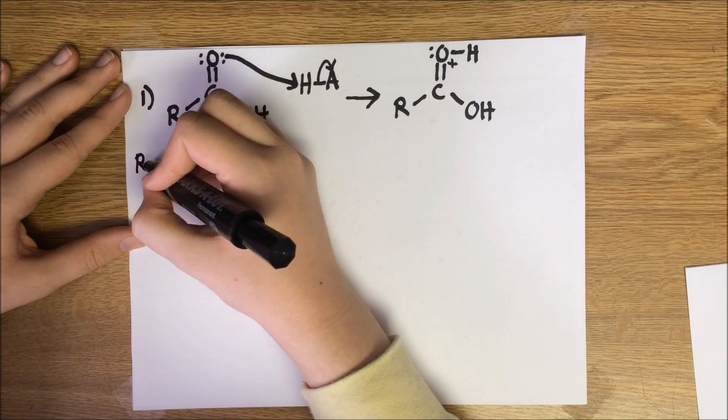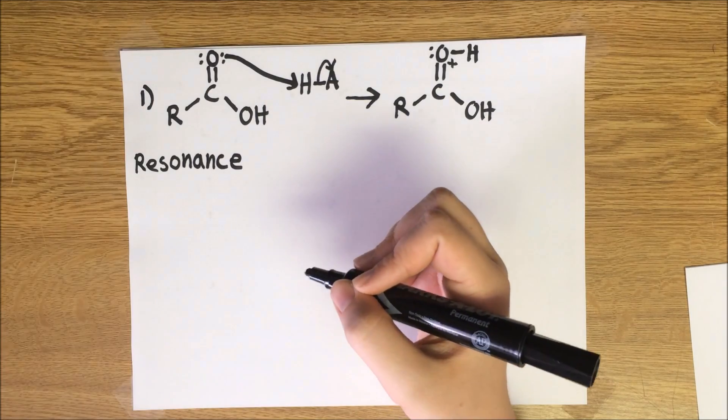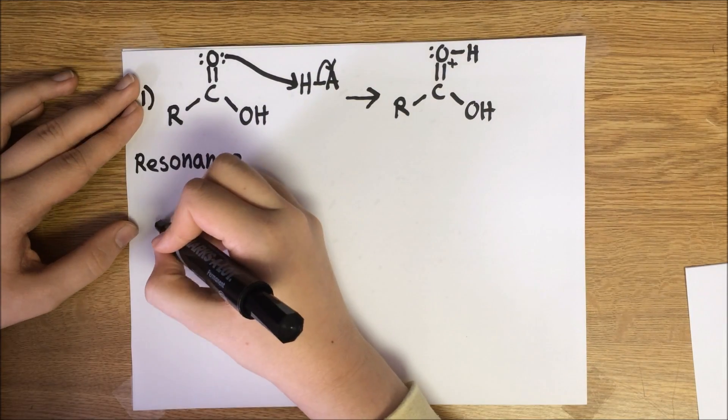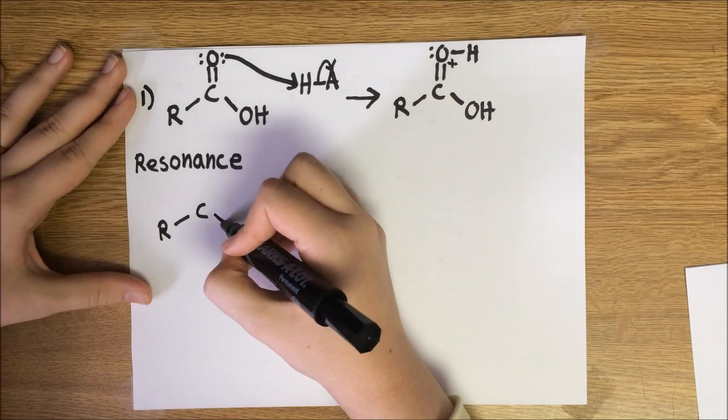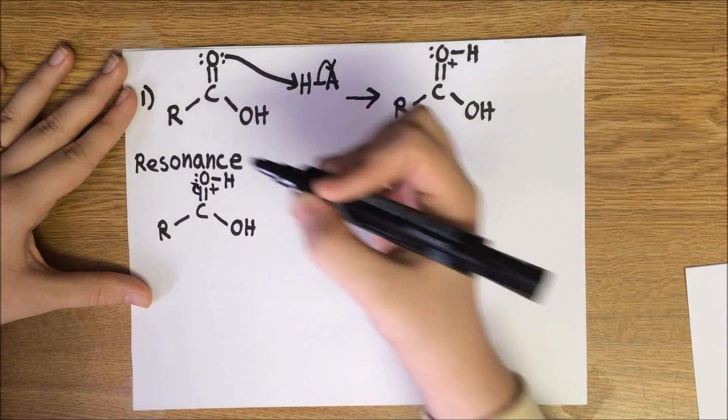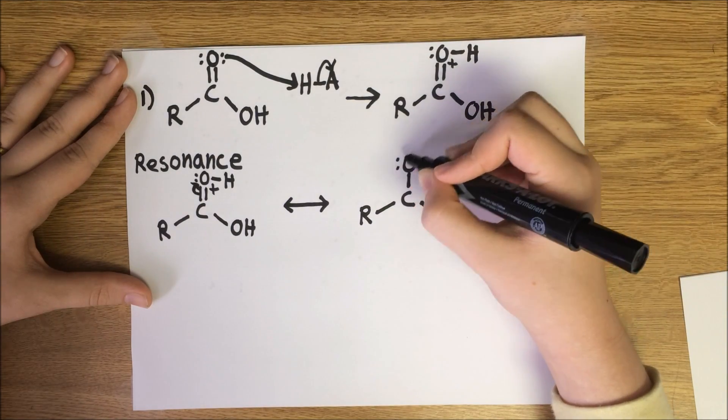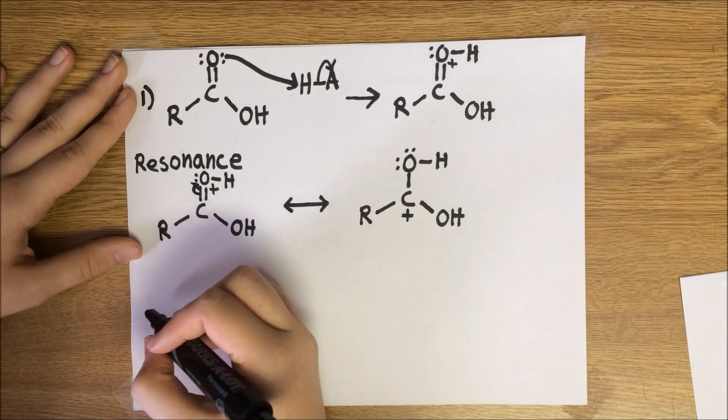The oxonium ion has resonance onto the carbon that stabilizes it. This is accomplished by the pair of pi electrons migrating up to the oxygen, leaving carbon with only three bonds and a positive charge. The carbocation is unstable, but it does contribute to the resonance. This causes the carbon to have a slightly positive charge even when the double bond to oxygen is present.